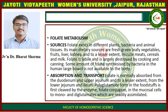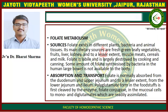Folate Metabolism — Source: Folate exists in different plants, bacteria, and animal tissue. Its main dietary sources are fresh green leafy vegetables, fruits, liver, kidney, and to a lesser extent muscle meats, cereals, and milk. Folate is labile and is largely destroyed by cooking and canning. Some amount of folate synthesized by bacteria in the human large bowel is not available to the body. Absorption and Transport: Folate is normally absorbed from the duodenum and upper duodenum, and to a lesser extent from the lower duodenum and ileum.